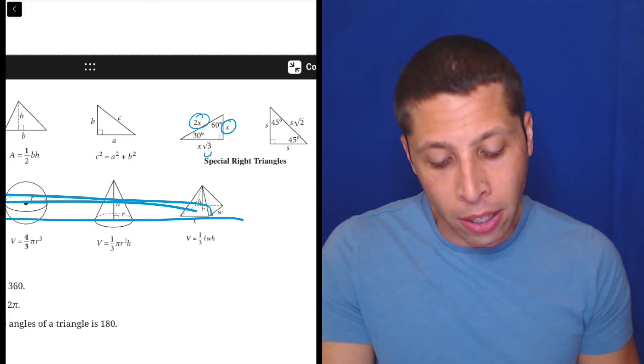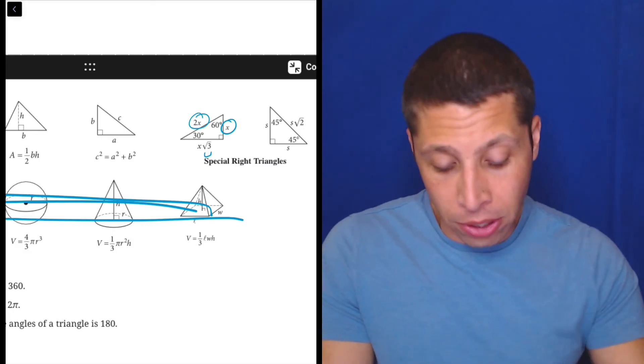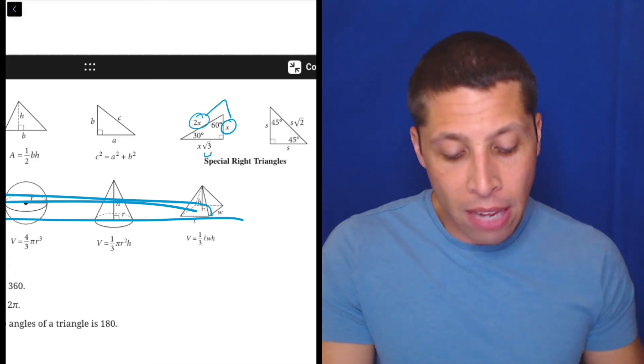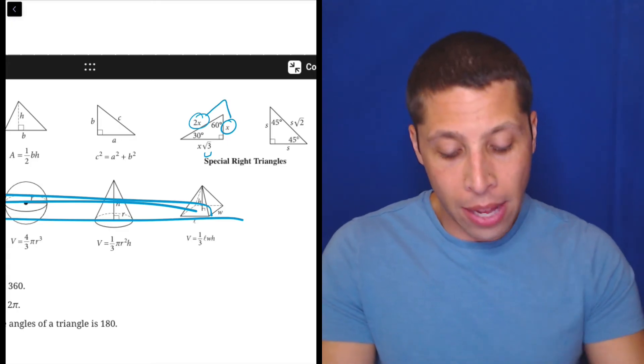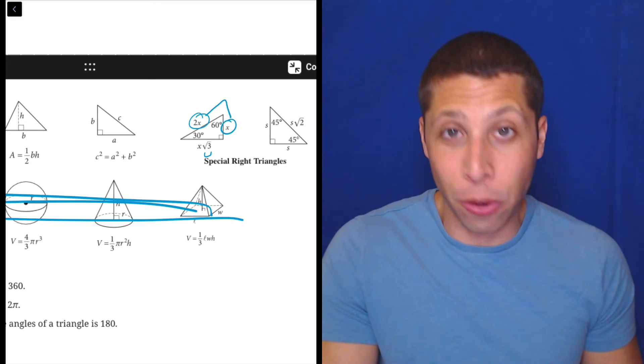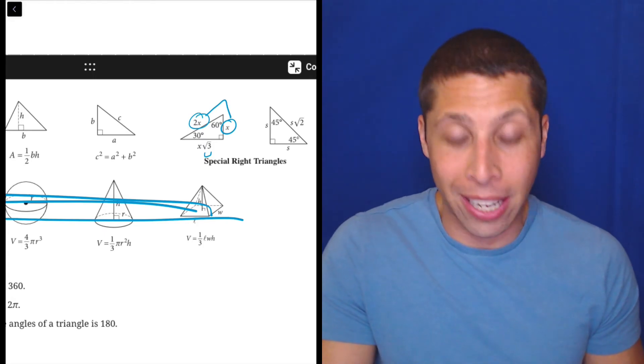So what's happening here is we know it has to be this 30-60-90 triangle because if we have this relationship, it's just got to be the way that the other one is x root 3. It's just how it goes.